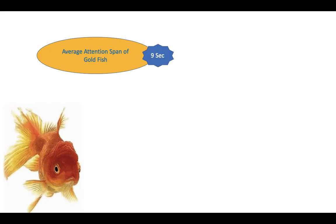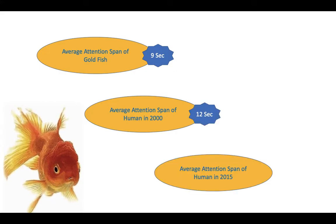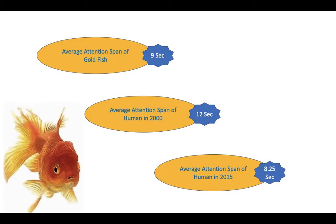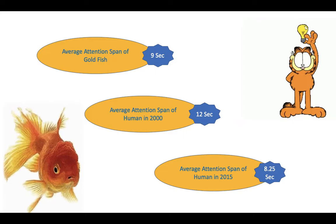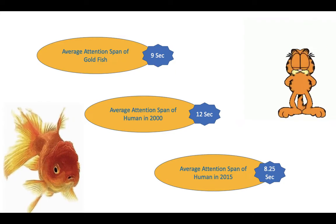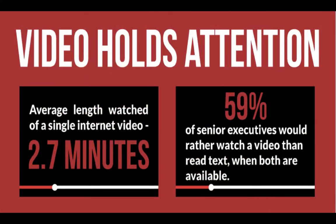Research made in the year 2000 found that the average attention span of a goldfish is 9 seconds, whereas the average attention span of a human in 2000 was 12 seconds. Now the average attention span of a human in 2015 is 8.25 seconds, so it has shrunk below that of a goldfish.